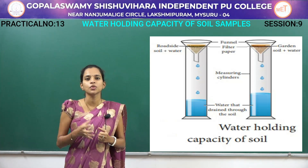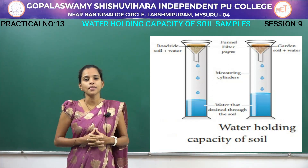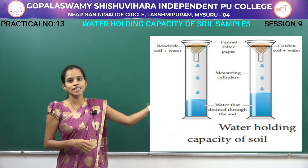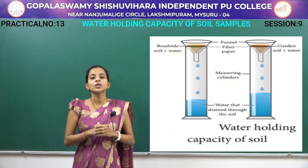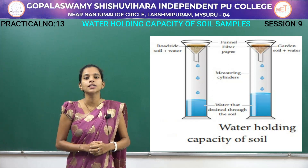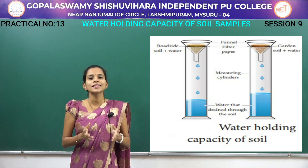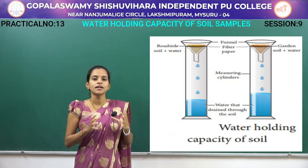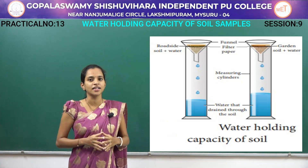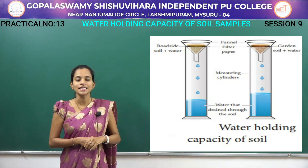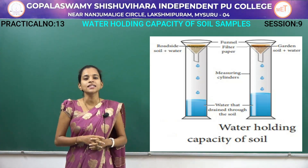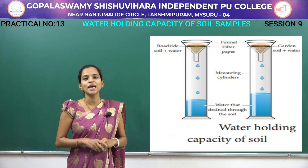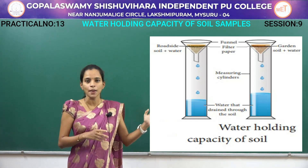Measure and weigh the soil up to 100 grams each, sun dry them and place aside. Take two clean measuring jars, two funnels, and muslin cloth or filter paper. Place the measuring jar, filter paper, and funnel as shown on screen. Then pour 100 grams of soil into each funnel and label the measuring jars as A and B.